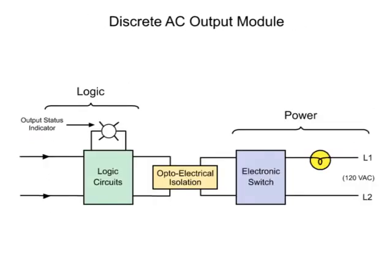For the AC output module, the circuit is comprised of a power section and logic section, coupled by an isolation circuit, similar to the input module, but in reverse order.